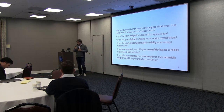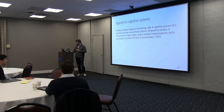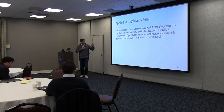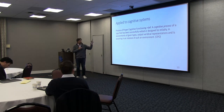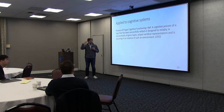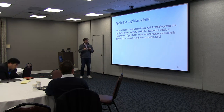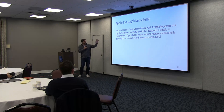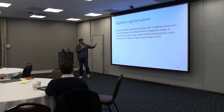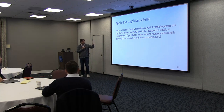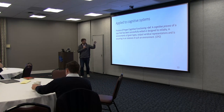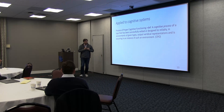Taking these considerations, I arrive at this notion, applying it now to cognitive systems. A cognitive representation is a representation that's trying to be veridical. A process of proper cognitive functioning — which is what we'd want from one of these models — is a cognitive process of a type that has been successfully vetted or designed to reliably, in environments of given types, output veridical representations, and is occurring in an instance of such an environment. We had this term in the cognitive process ontology.